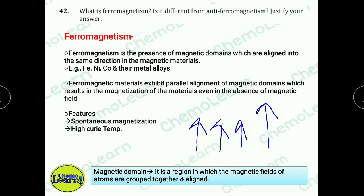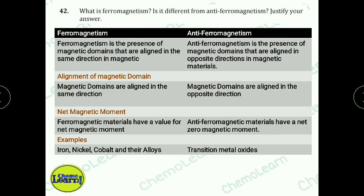Ferromagnetic materials also exhibit a high Curie temperature. In antiferromagnetism, the alignment of magnetic domains is in the opposite direction — adjacent magnetic moments are antiparallel. The net magnetic moment cancels out, resulting in zero net magnetization. This is the key distinction from ferromagnetism where all domains align in the same direction giving a large net magnetic moment.